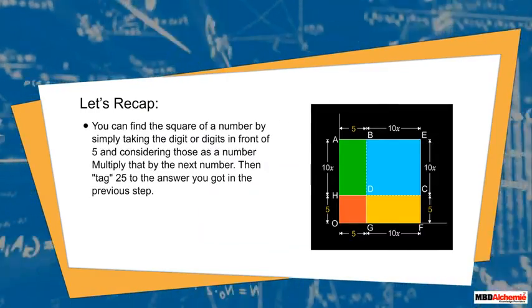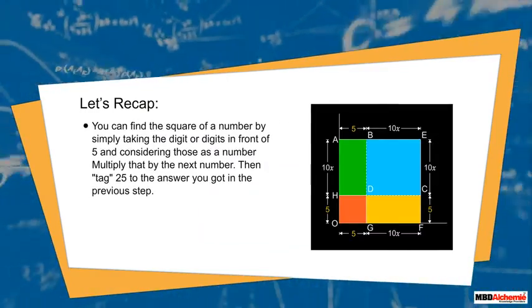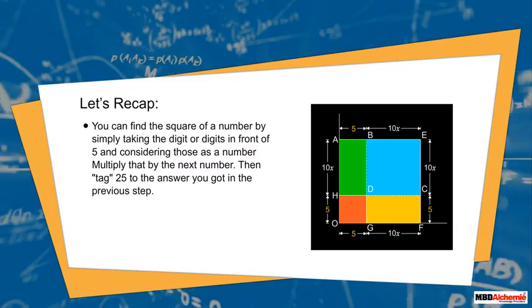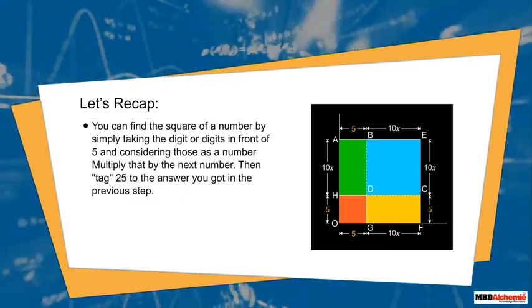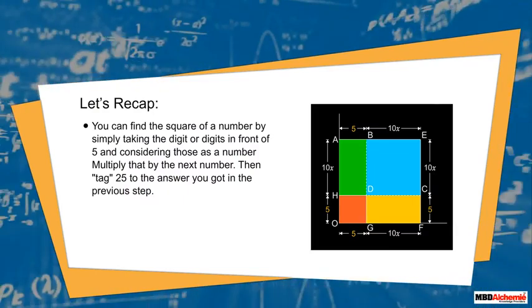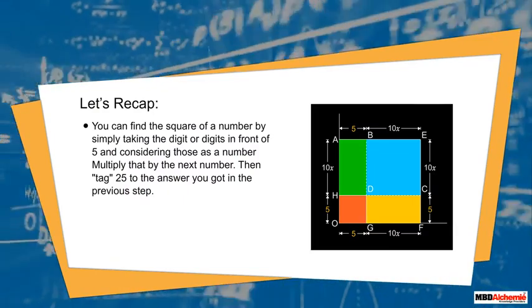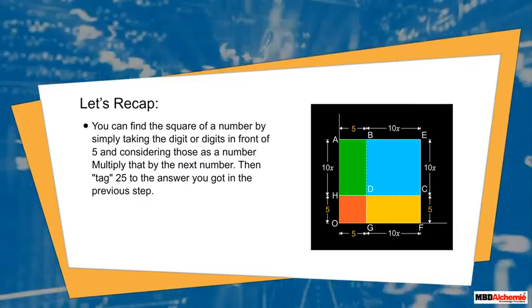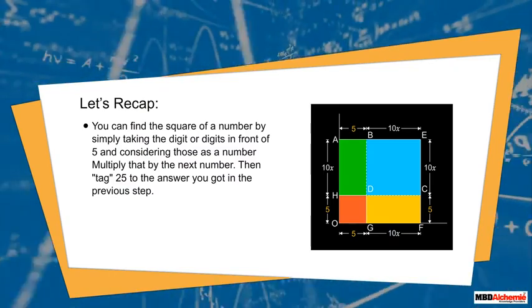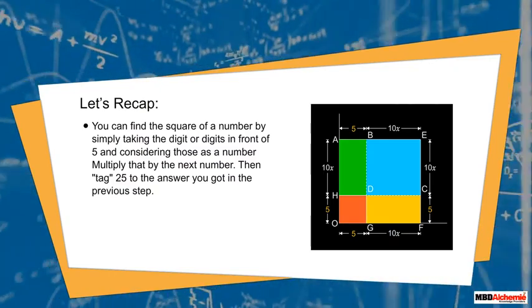You can find the square of a number ending in 5 by taking the digit or digits in front of the 5 and considering those as a number. Multiply that with the next consecutive number, then tag 25 to the answer you got in the previous step.